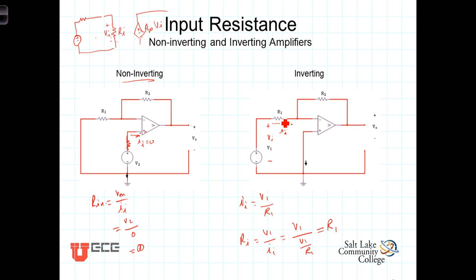Well, what's the problem with that? In order to make the input resistance to the inverting amplifier large, we'd have to make R1 large. If we wanted it to be on the order of a megaohm, we'd have to make R1 be one megaohm. Well, that in and of itself isn't a problem.